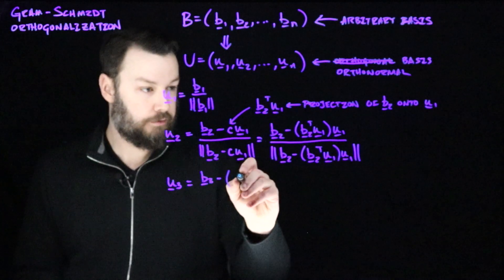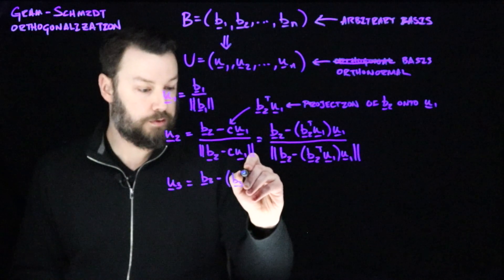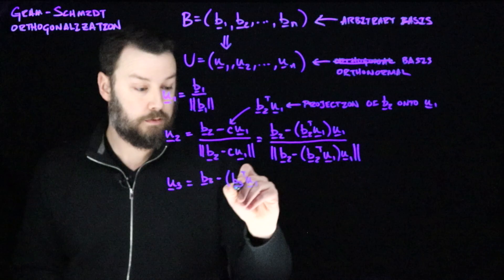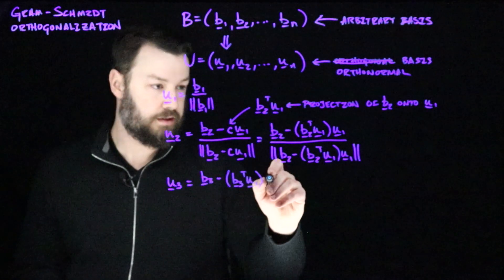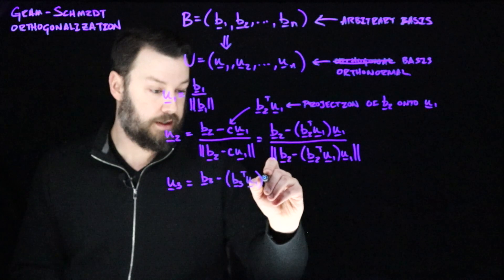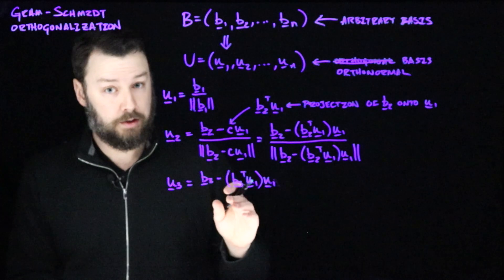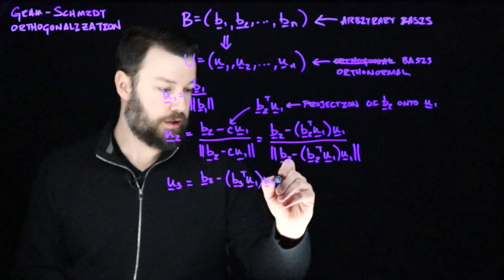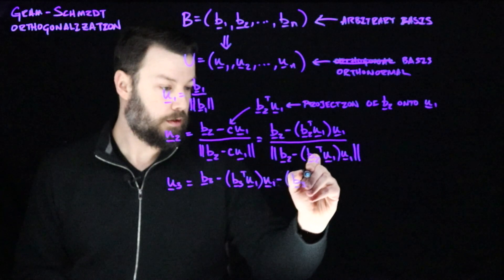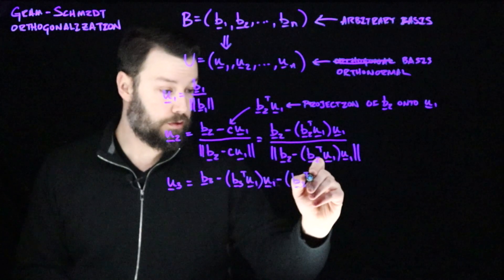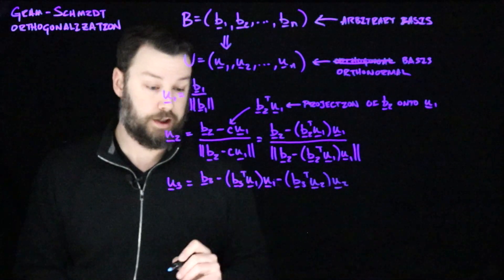We're going to subtract first the part of b1. So we'll say b3 transpose u1. So that's projecting b3 onto this first basis vector, and we'll scale that again by u1. Now we're going to do the same thing, but with u2. So we're going to take b3 and project it also onto u2, and then scale u2 with that result.